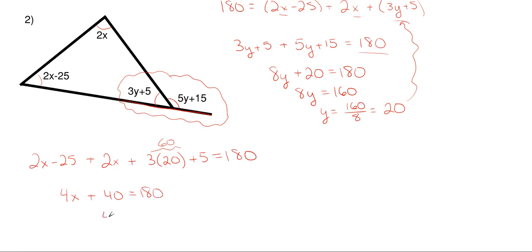So I subtract 40 from each side. We end up with 4x is equal to 140. Then x is just going to be equal to 140 divided by 4, and that gives me 35.